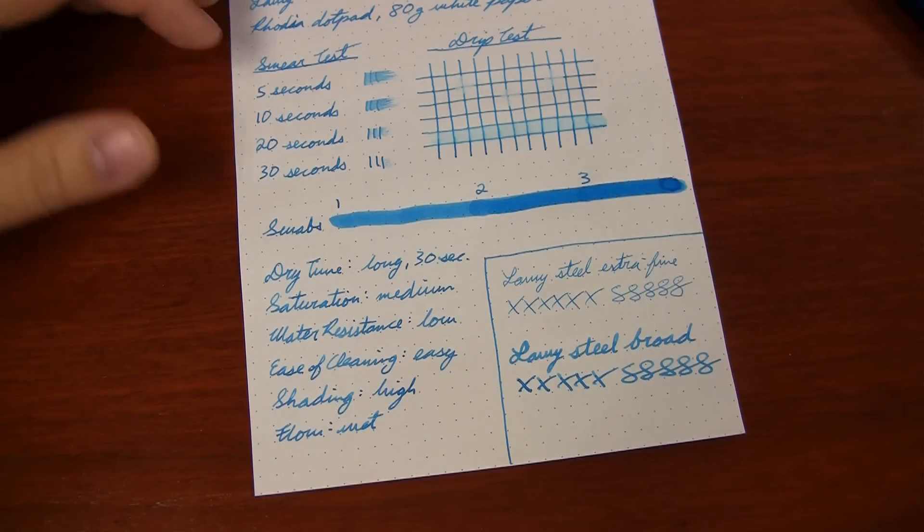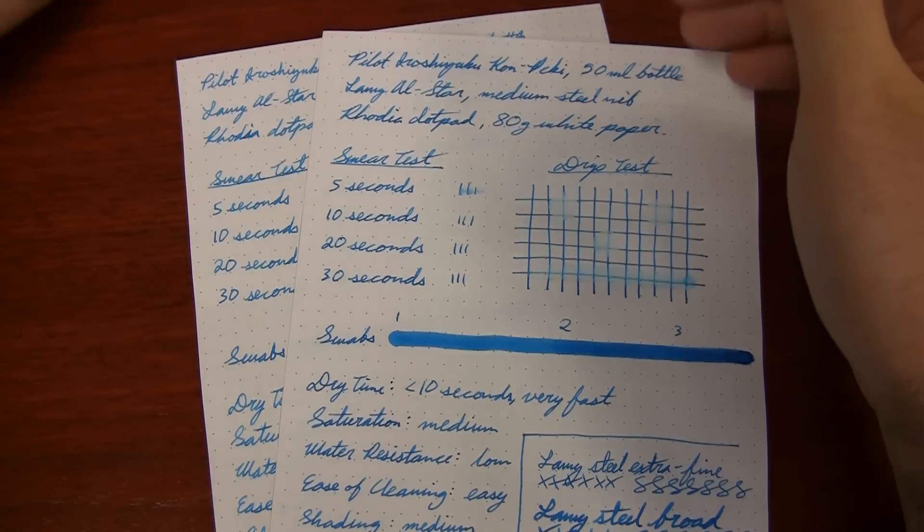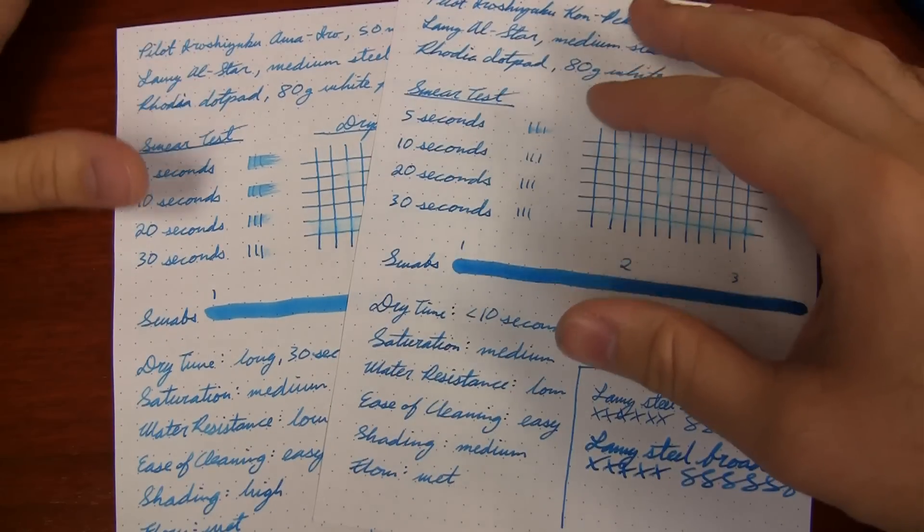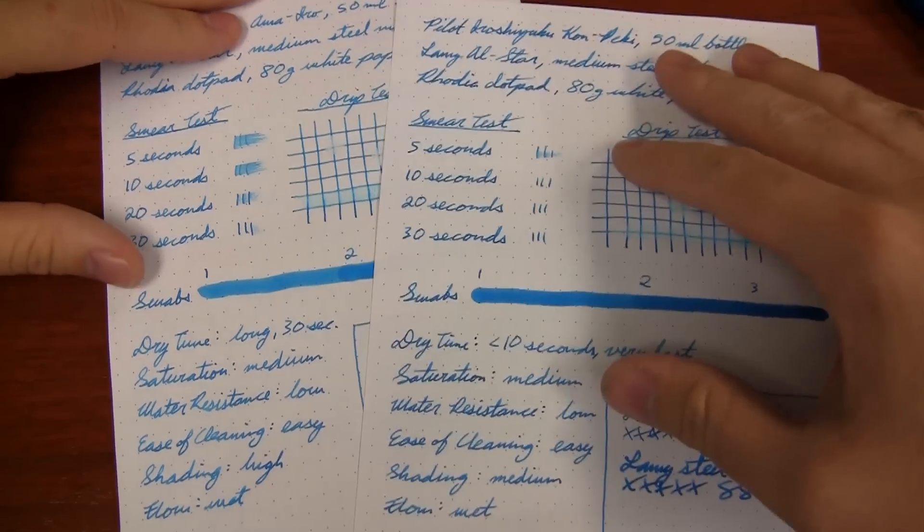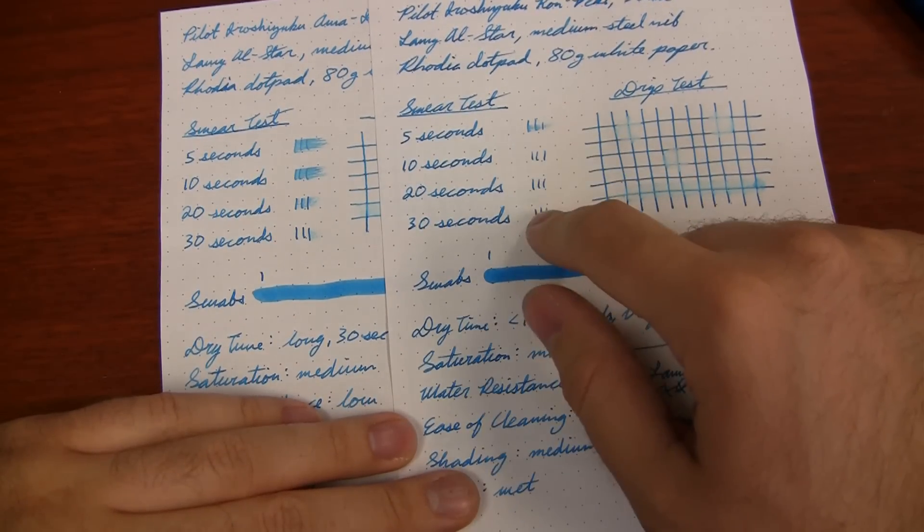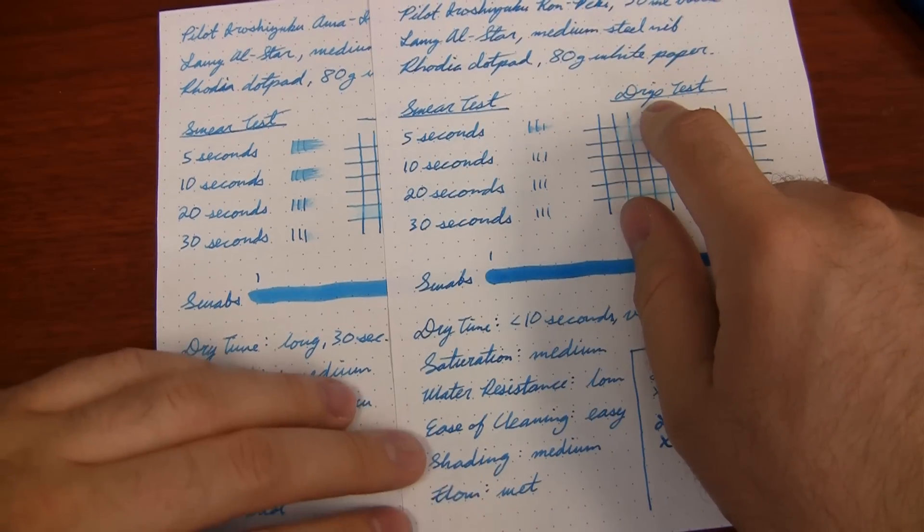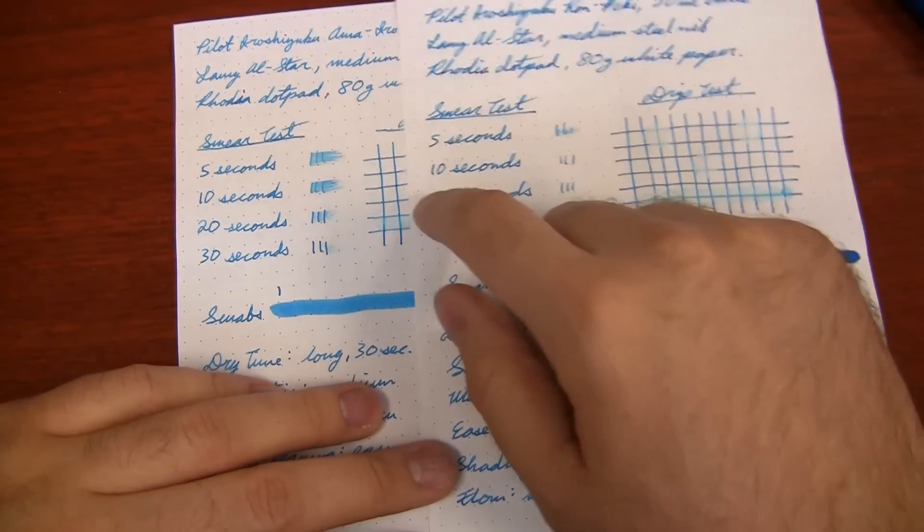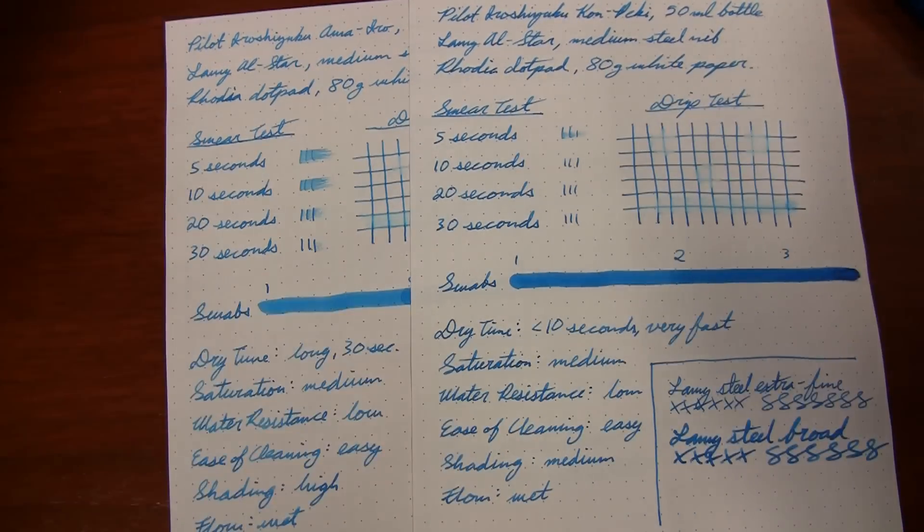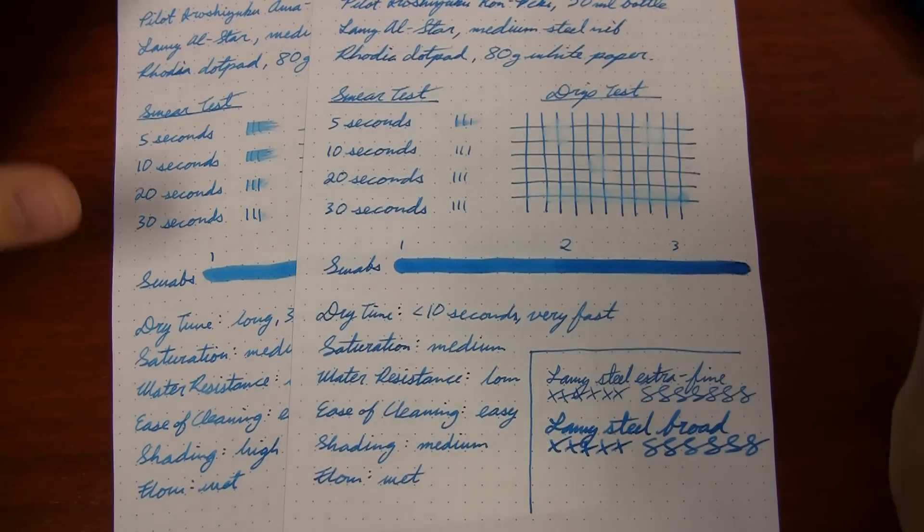Just kind of as a comparison, I thought I had this review of Konpeki, which is another Iroshizuku ink that I'm a big fan of. It's a similar kind of blue. It's a darker, not quite as sky blue. But to show you what I was talking about with that dry time thing, here's the dry time I would get with Konpeki. It would smear after 5 seconds, but by 10 seconds it was completely dry. You can see here with the Ama-Iro, it's going to take upwards of 30 seconds to get that same kind of smear. So I don't know what they did different with this, but I was a little disappointed in that.